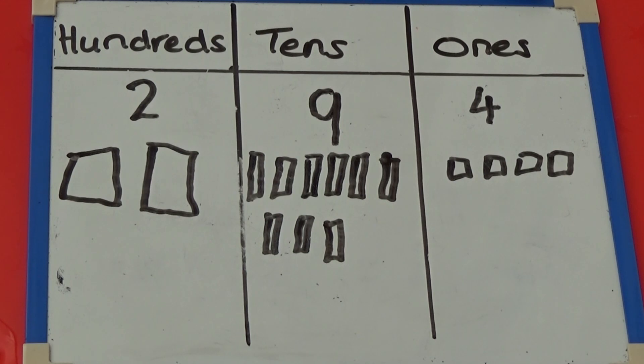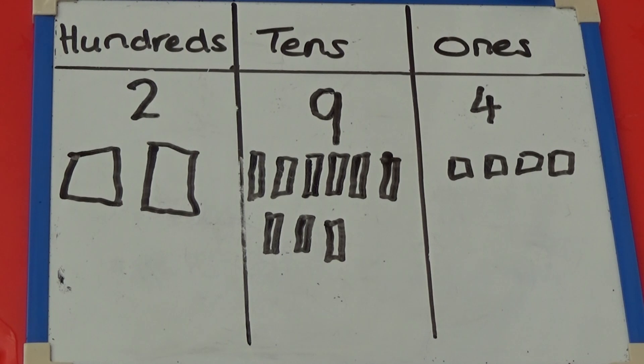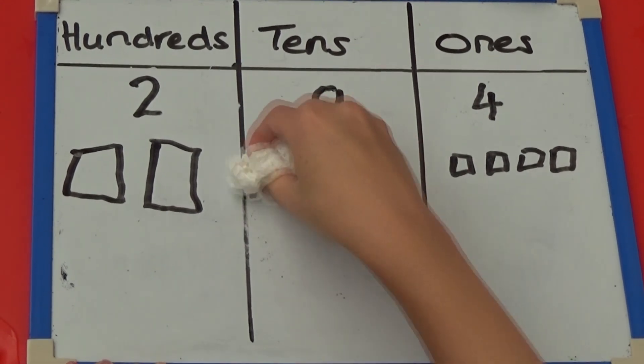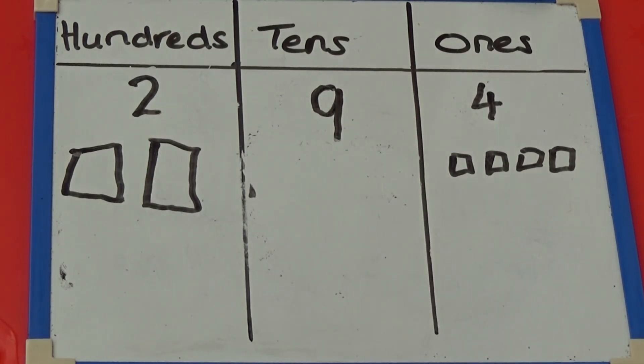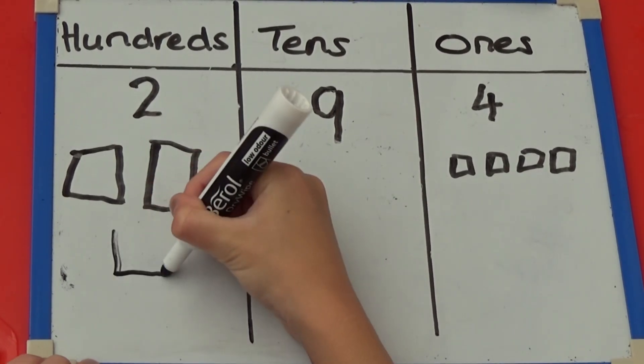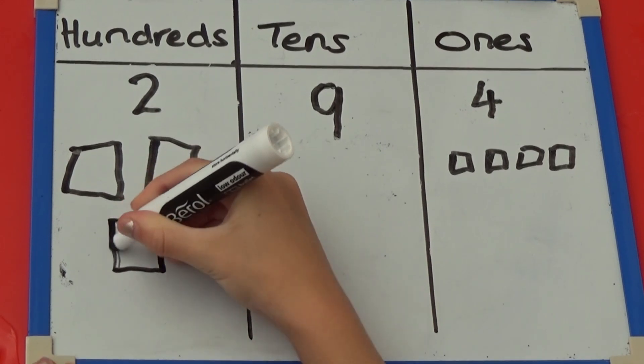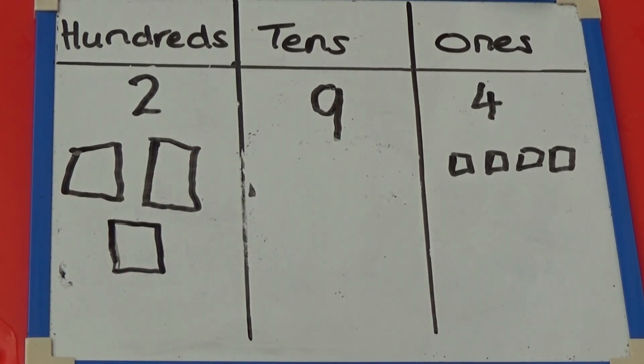I can also show this as a picture. I have drawn out the tens for the number 294. If I add 10, I need to cross out the 9 tens I already have and add 100, a hundred square. So I now have 304.